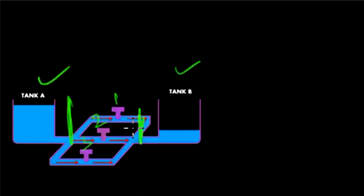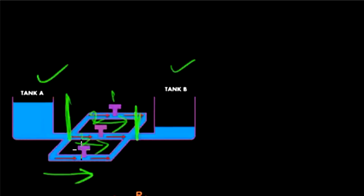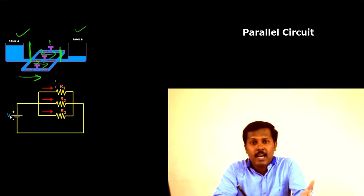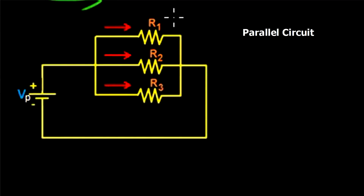All pipes come to a common end, so the pressure difference experienced by all the pipes is the same. However, there are three separate water flows — one through each pipe — so there are three different water currents present in this pipe system. A similar kind of circuit can be seen in electronic circuits, and that kind of circuit is known as a parallel circuit.